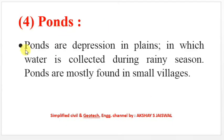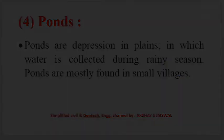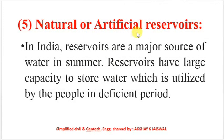Ponds are depressions in plains in which water is collected during the rainy season. Ponds are mostly found in small villages. Natural or artificial reservoirs: in India, reservoirs are a major source of water in summer. Reservoirs have large capacity to store water, which is utilized by people in the deficient period. In summer, when water is not available in sufficient quantity, we can use the water already stored in the reservoir.